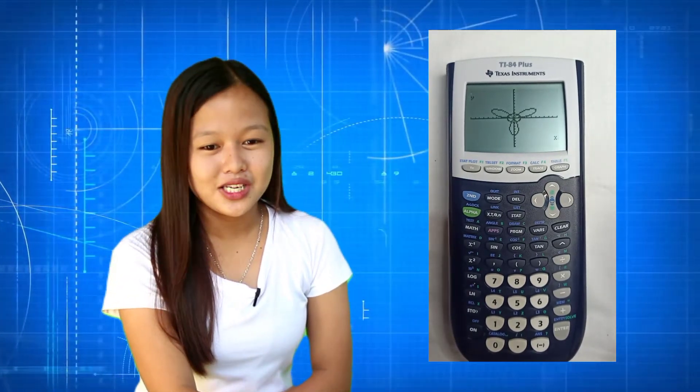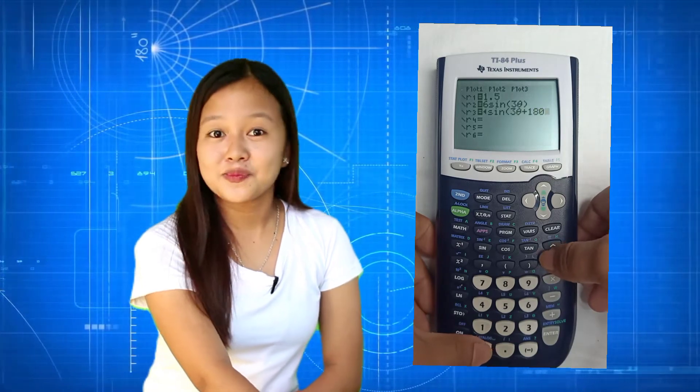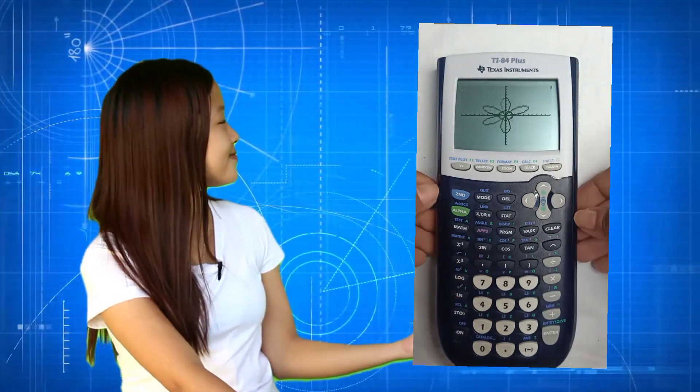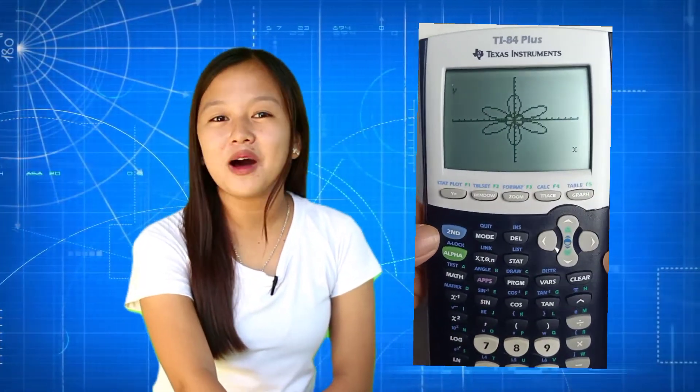So, let's go on to the last polar equation. For the last equation, we have r equals 6 sine of 3 theta plus 180. Let's press the graph button. And here, we have now our output.